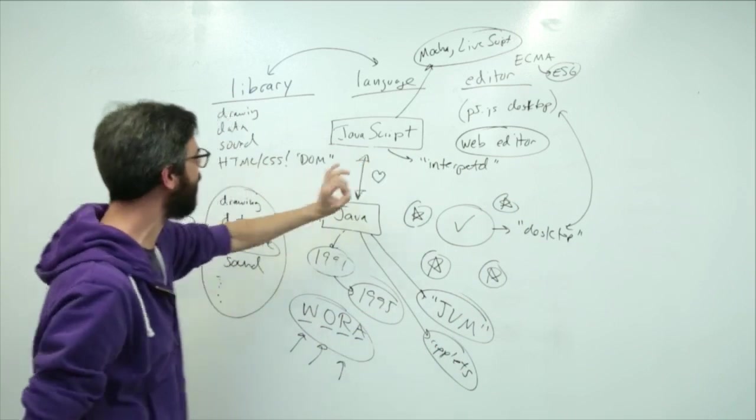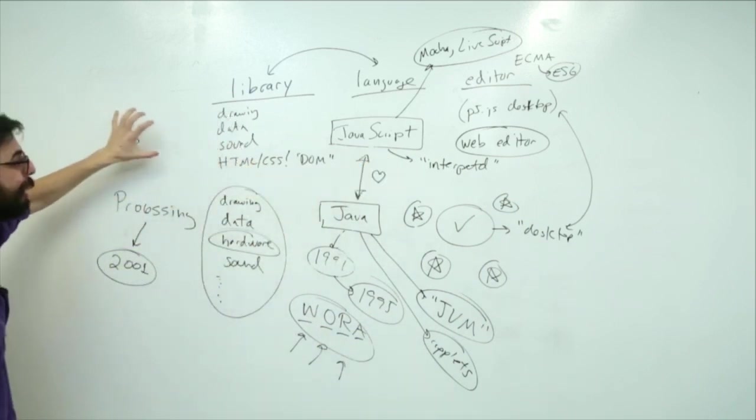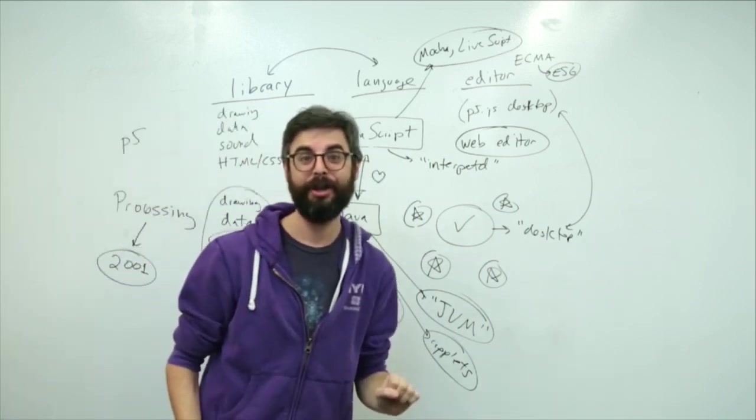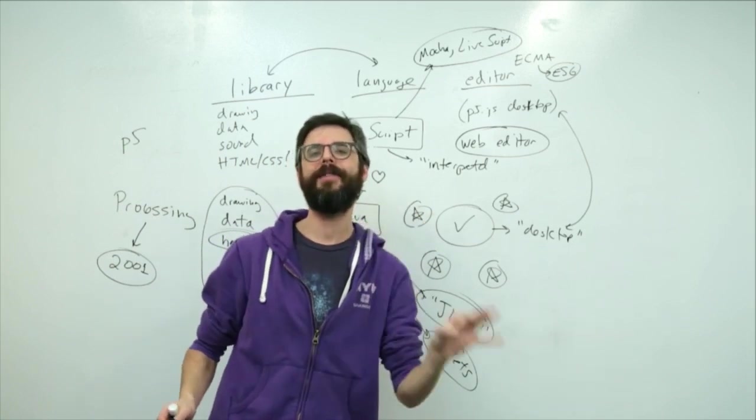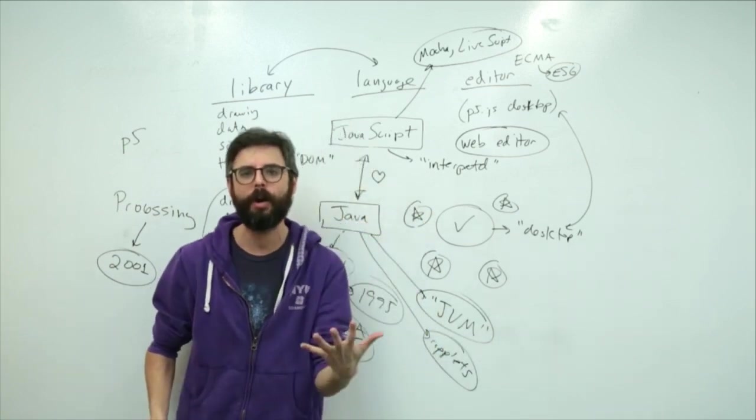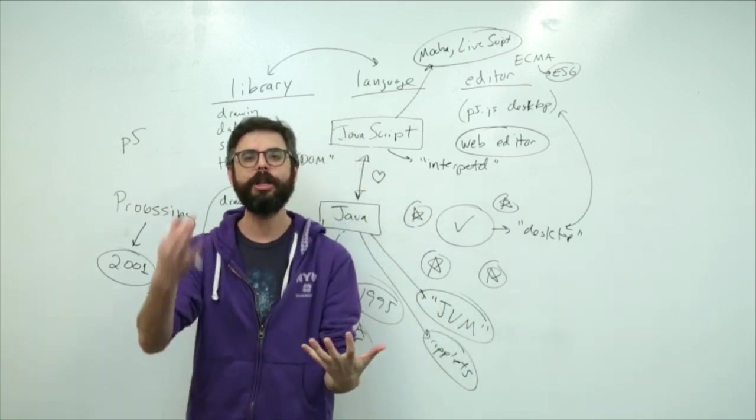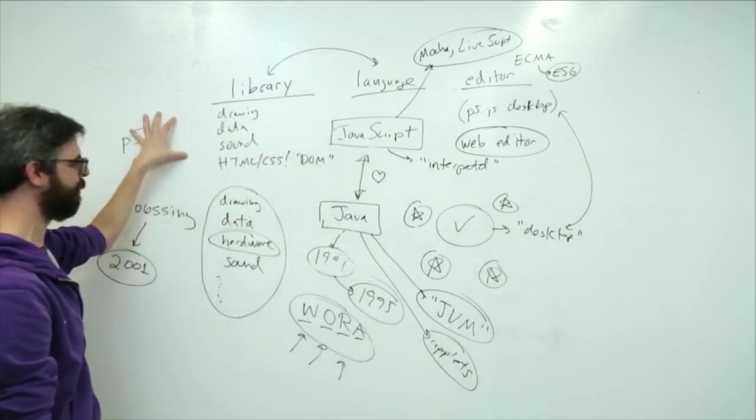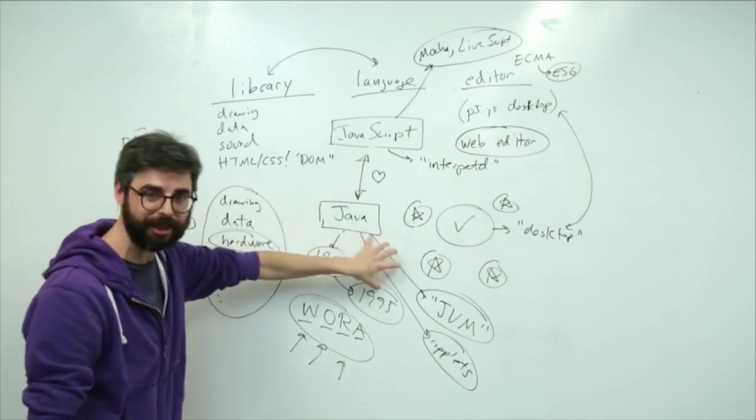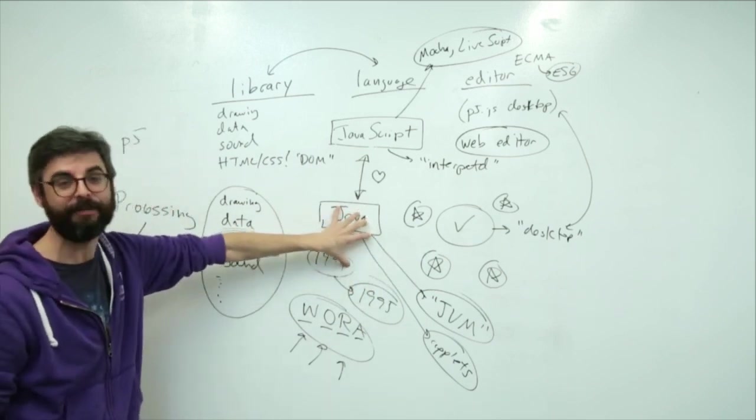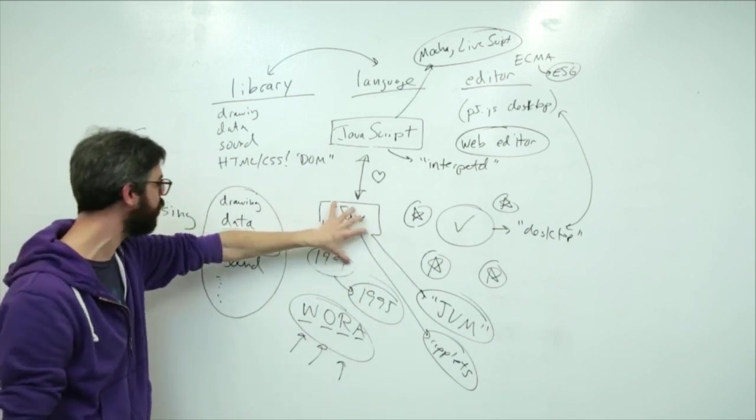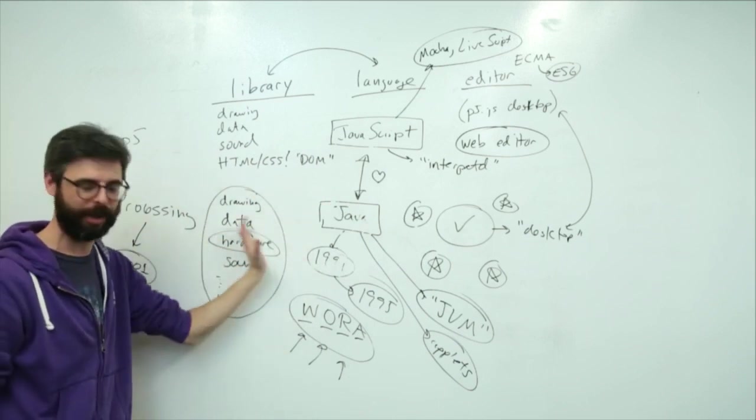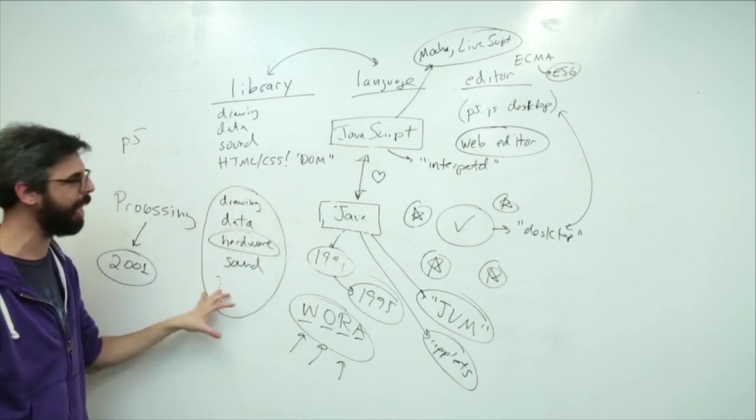A key difference however is that while Java is compiled code, you have to write your code and then run it through a process that converts it into zeros and ones so that it can be executed as an application, JavaScript doesn't work that way. JavaScript is what's known as an interpreted language meaning the browser just reads your code and executes it at the same time.